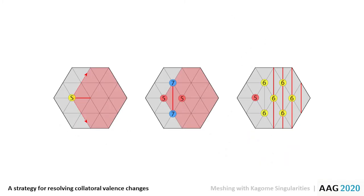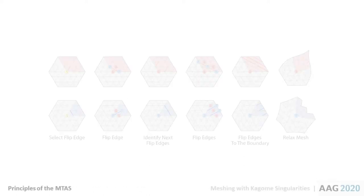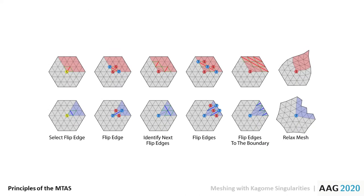This can be accomplished by chasing the unwanted valence changes out to the mesh boundary within a constrained region. This principle holds for decreasing or increasing valence with an edge flip. In the top row we embed a valence 5 singularity, in the bottom row a valence 7.